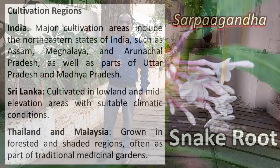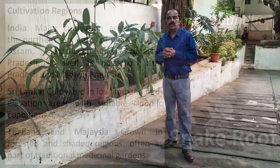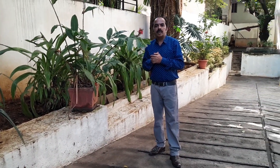The plant grows in a variety of forest types including tropical rainforest and deciduous forest. It is typically found in shady, moist environments and is often cultivated in medicinal plant gardens. In India, Rauwolfia serpentina is grown in Assam, Meghalaya, Arunachal Pradesh, Uttar Pradesh, and Madhya Pradesh, cultivated in lowland and mid-elevation areas with suitable climatic conditions.